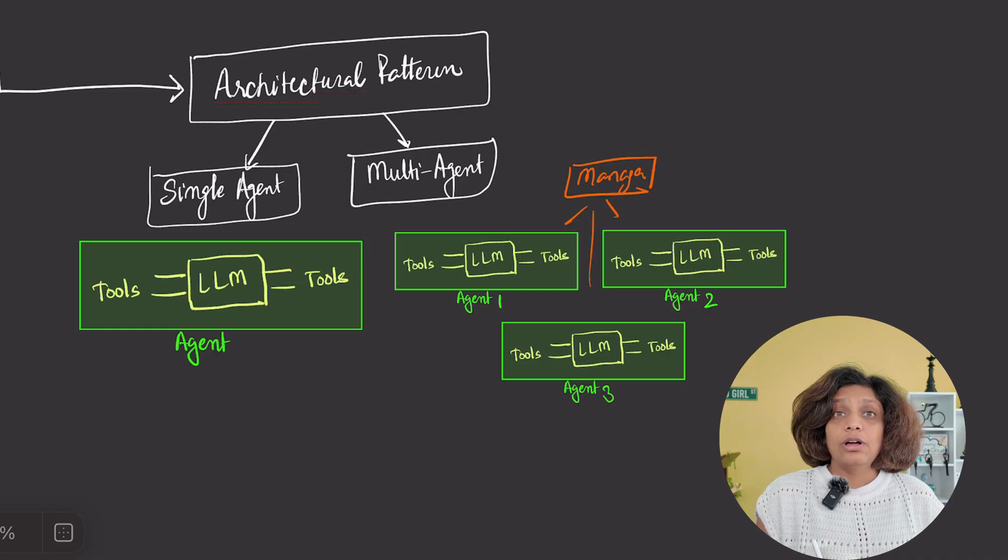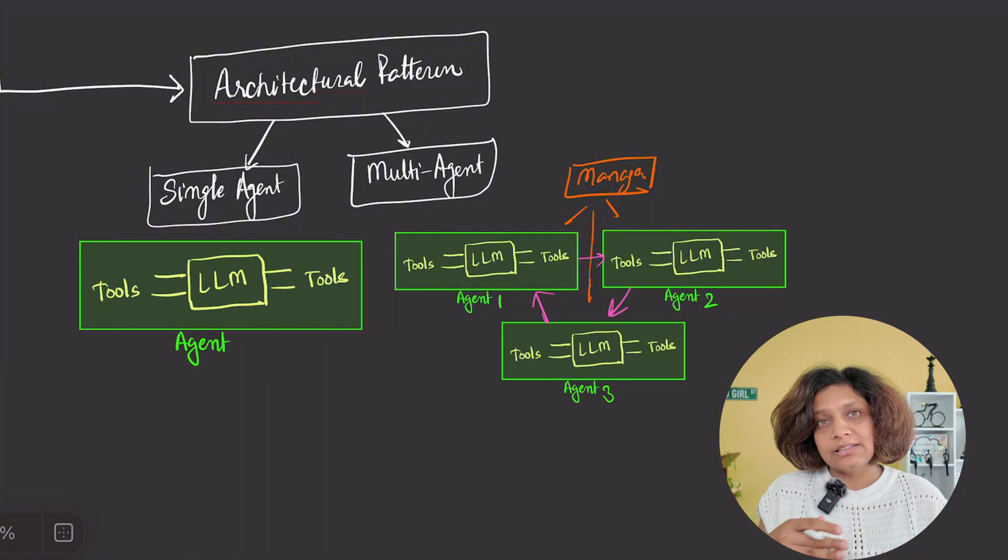Multi-agent systems can follow a manager pattern, where there's a central manager agent that delegates tasks to specialized worker agents. Here's an example. A manager agent planning a marketing campaign might delegate copywriting to a copywriting agent and data analysis to a data analysis agent. Or they can follow a decentralized pattern where agents hand off tasks to each other as peers without a central manager. The pattern you choose depends on your workflow complexity and how specialized your tasks need to be.